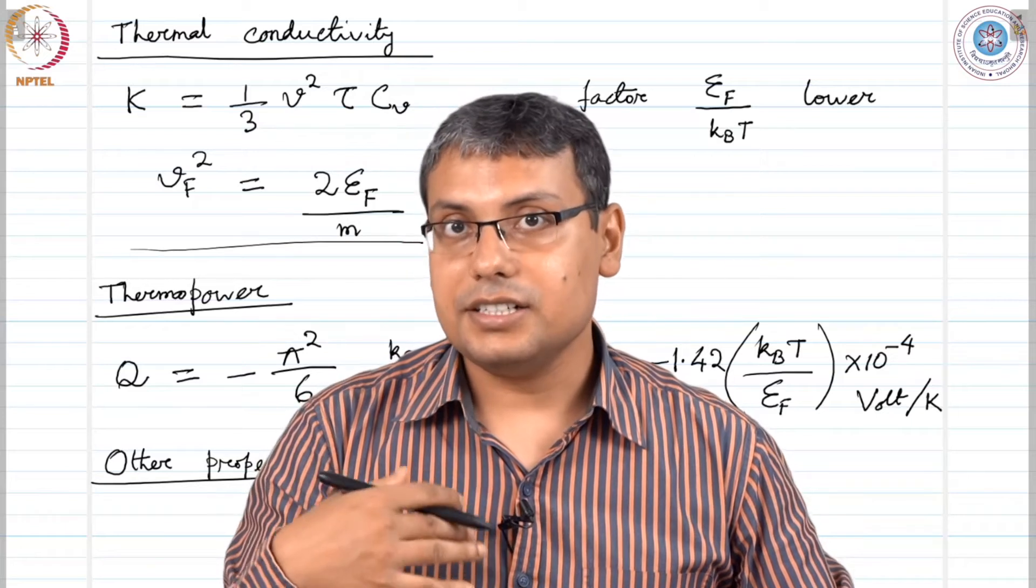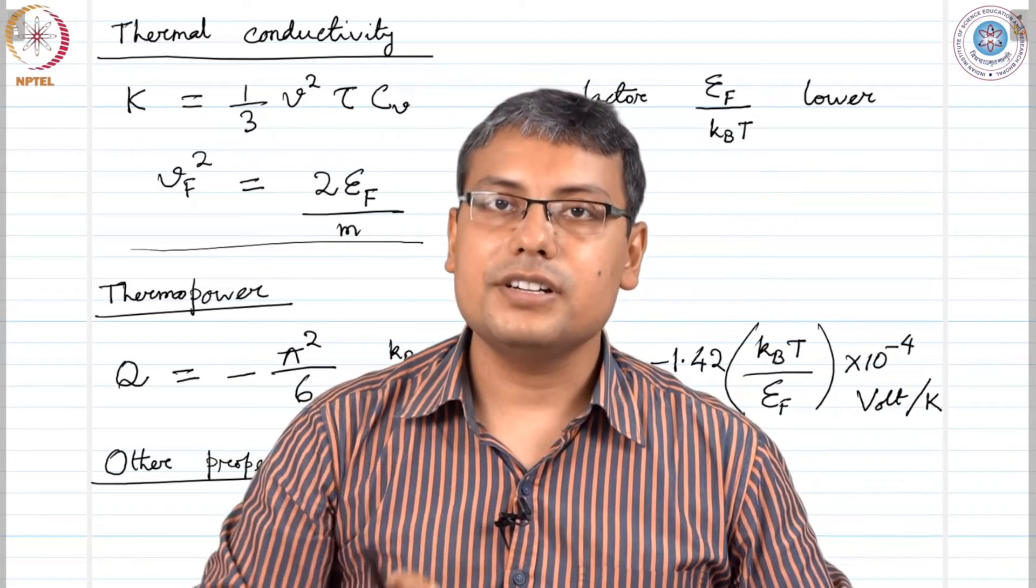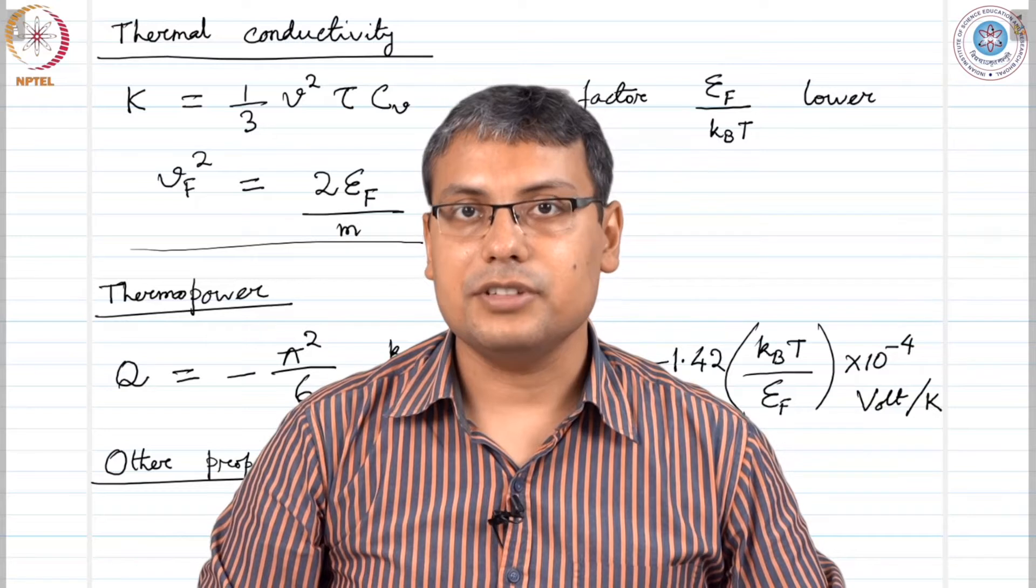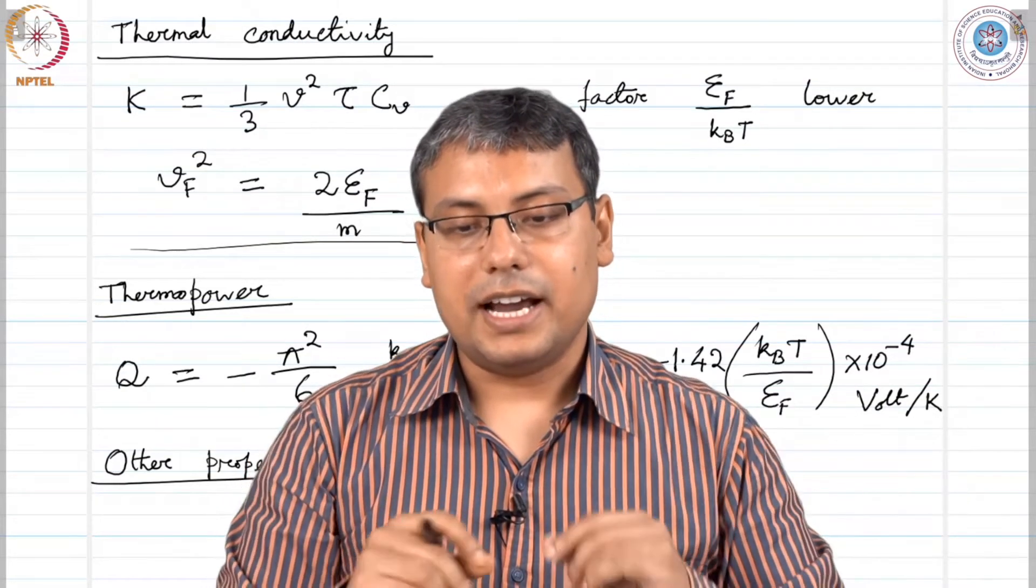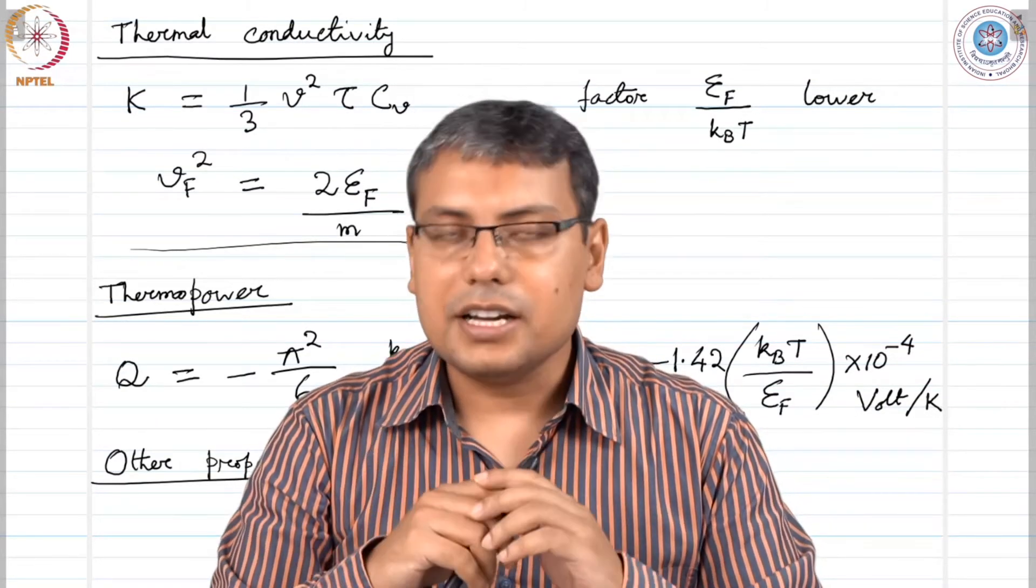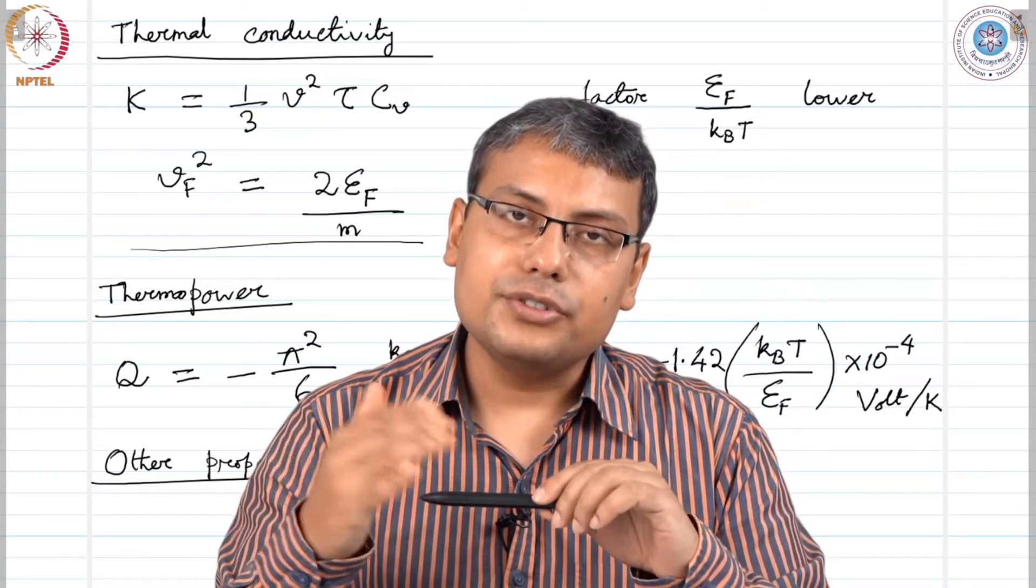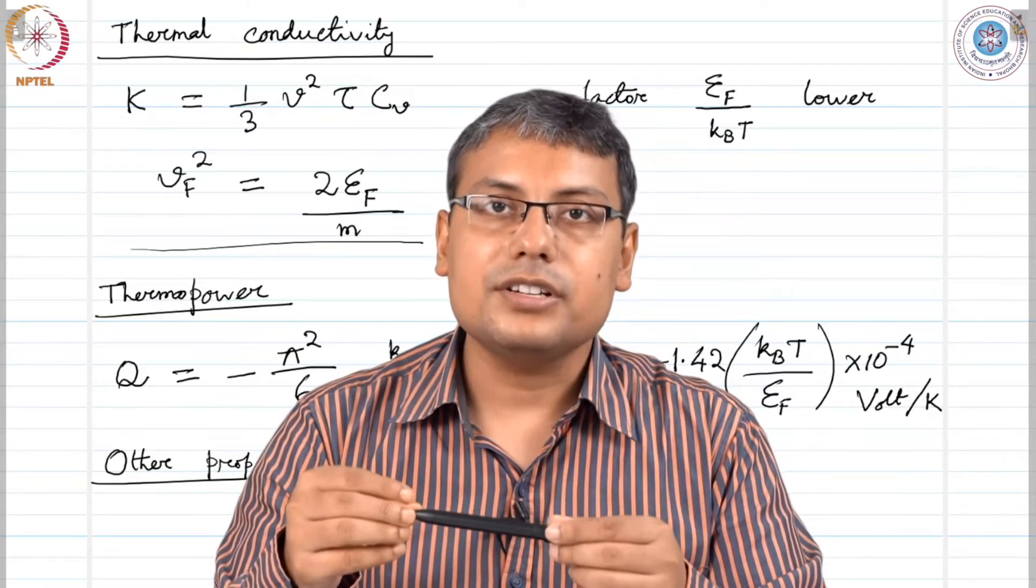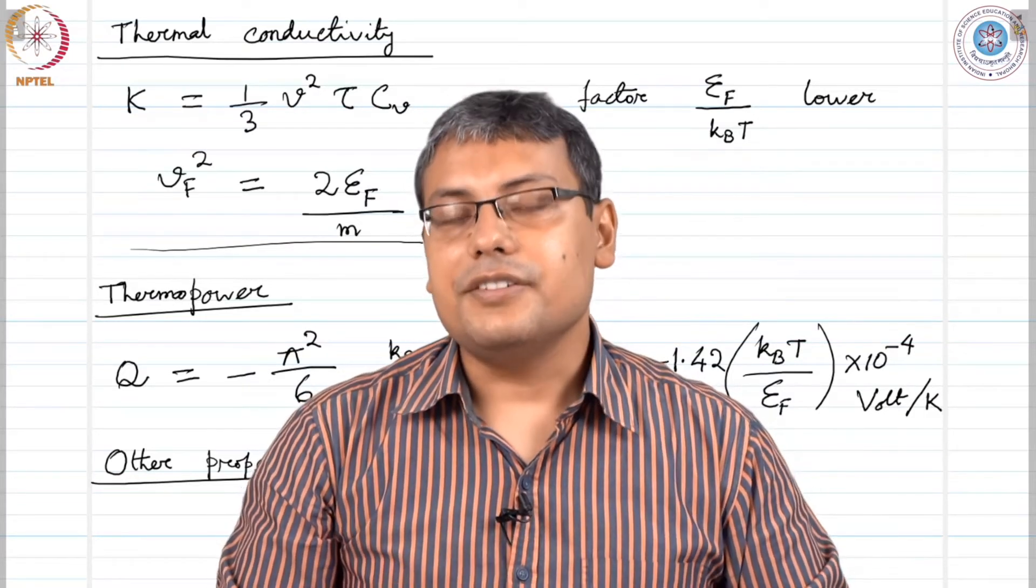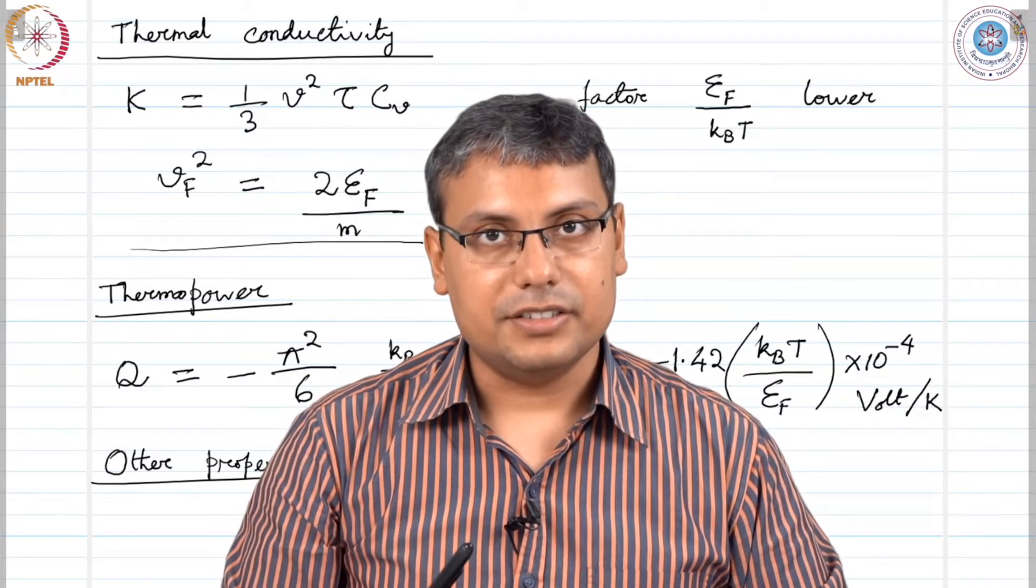If the relaxation time depends on energy then the energy distribution function is different in Fermi Dirac and Maxwell Boltzmann distributions. If we consider relaxation time depends on energy then even the Druder expression that we obtained will change significantly at different temperature.